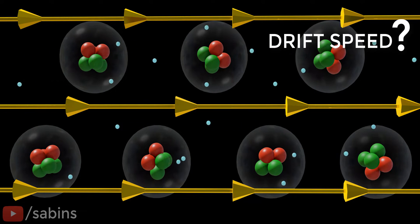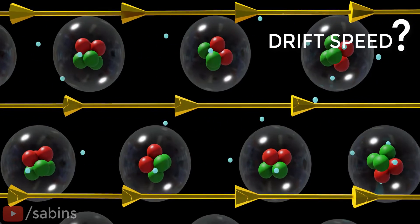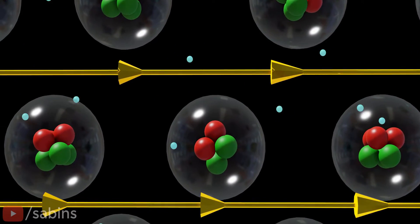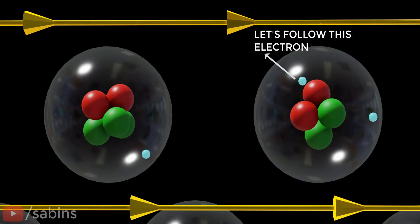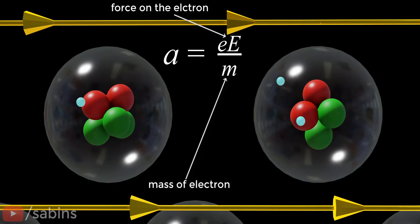If you can figure out the magnitude of this drift speed, it is very easy to calculate the value of current. Here comes the brilliant way to find the drift speed. Let's follow an electron. The electron accelerates due to the effect of the electric field.